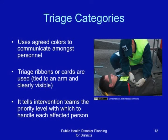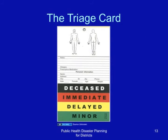Triage categories: triage uses agreed colors to communicate among EMS personnel. Triage ribbons or cards can be used, although in resource-constrained countries we may use other calling systems. It tells the intervention teams the priority level with which to handle each affected person. This is an example of a color-coded triage card.